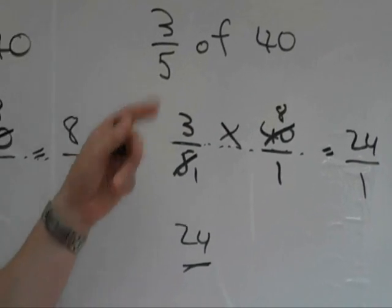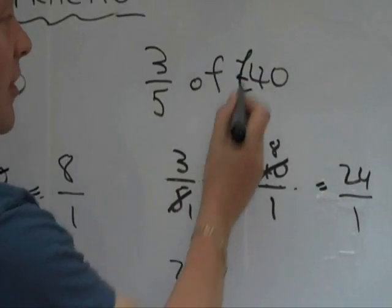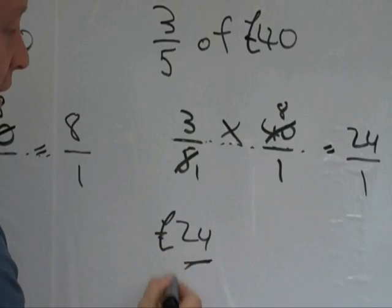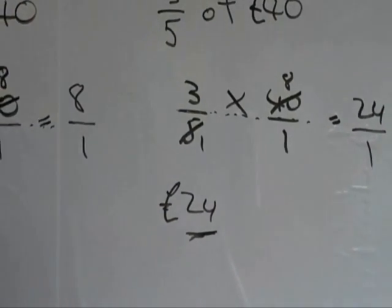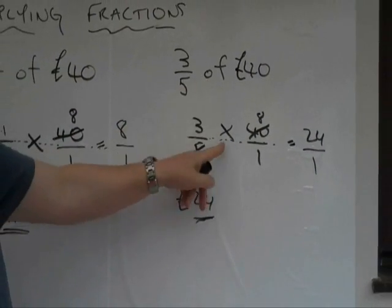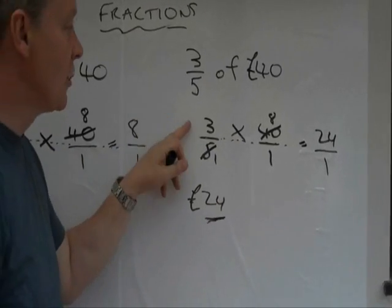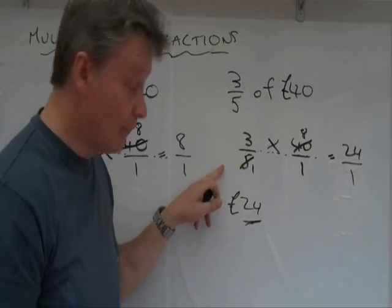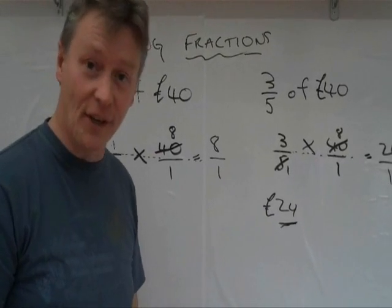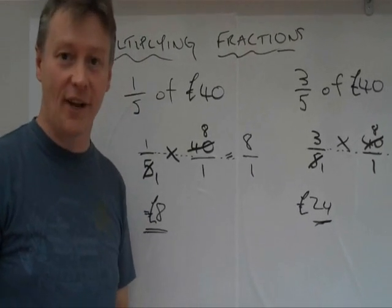So if you like, 3 fifths of 40 pounds is 24 pounds. So the important things to do is to remember that of means multiplying. And whatever you do to the top, you must do to the bottom. And that will give you your answer. And that's how to multiply fractions together.